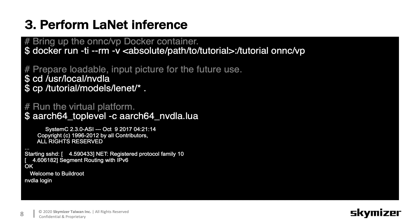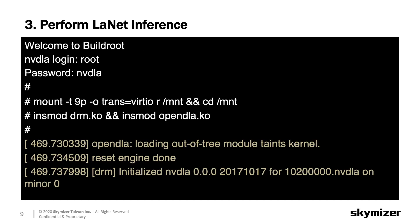When you bring out an Onyx-VP Docker container, remember to mount your Onyx tutorial folder to it. There is an executable called aarch64_toplevel, located in the /usr/local/nvdla folder in the Onyx-VP Docker container. It provides an NVDLA runtime environment with a CPU model and an NVDLA SystemC model. Before running the emulator, please copy the loadable file to the /usr/local/nvdla folder. You may use aarch64_toplevel to launch the virtual platform, and you will see the buildroot welcome message and a Linux prompt.